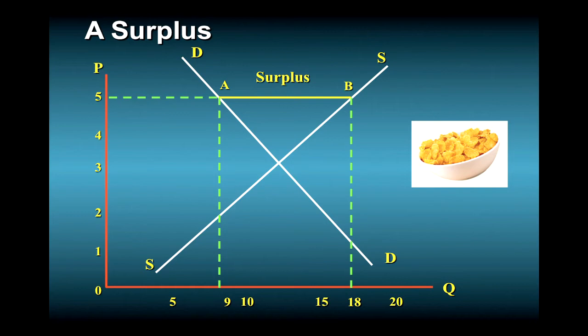This surplus is equal to point B in the curve minus point A, or 9 million boxes. So what do you think happens next? You guessed it. With all those extra boxes of Corn Flakes piling up in their warehouses, firms will start lowering their price, and they will keep lowering it right up until the point that the surplus disappears at point C in the graph.